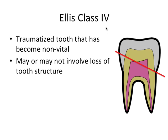Ellis class 4 is a little bit different. It refers to a traumatized tooth that has become non-vital, and it may or may not involve actual loss of tooth structure. Treatment for a class 4 would be root canal therapy for a closed apex tooth, or apexification for an open apex tooth.